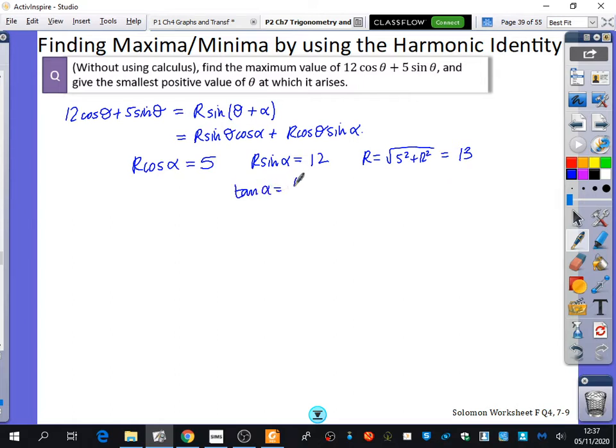And tan alpha is sin alpha over cos alpha. So alpha is the inverse tan of 12 over 5, and I think we'll just stick in degrees here. It doesn't really say the inverse tan of 12 over 5, and we get 67.4 degrees to one decimal place.